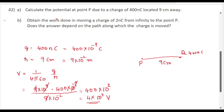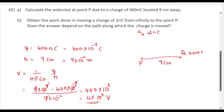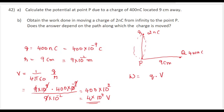This is the answer for the first part: the potential at point P is 4 into 10 to the power of 4 volt. For sub-question b, we need to obtain the work done in moving a charge of 2 nanocoulomb from infinity to point P. We know that work done is equal to Q into V. Q is 2 nanocoulomb and V is 4 into 10 to the power of 4. So work done equals 2 into 10 to the power of minus 9 into 4 into 10 to the power of 4, which equals 8 into 10 to the power of minus 5 joule.